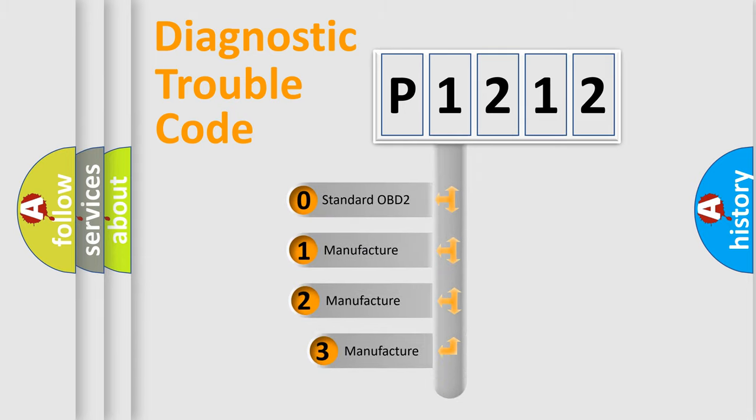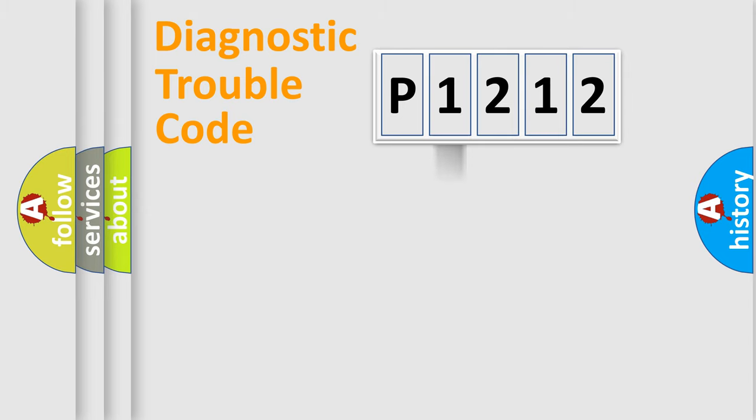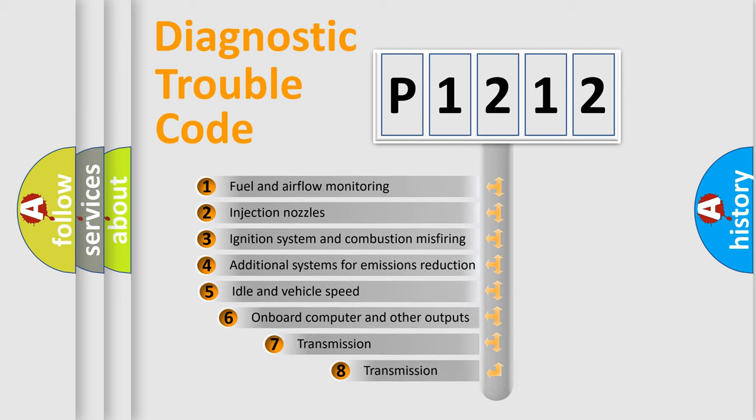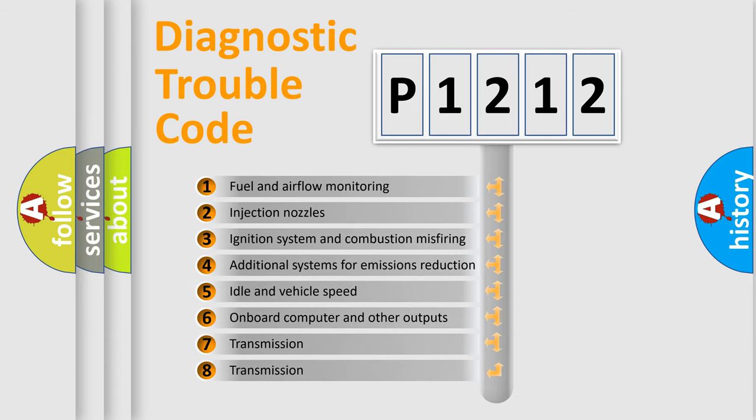If the second character is expressed as zero, it is a standardized error. In the case of numbers 1, 2, or 3, it is a more specific expression of the car-specific error. The third character specifies a subset of errors.